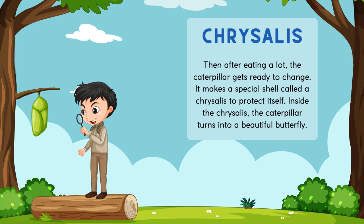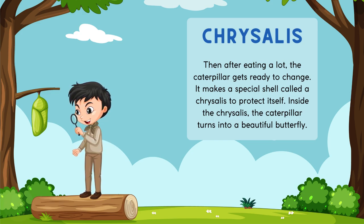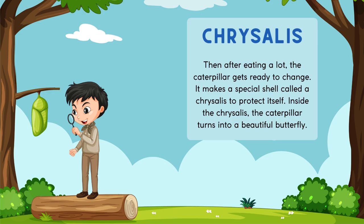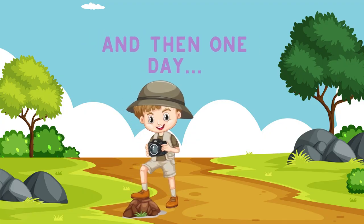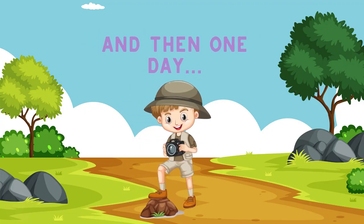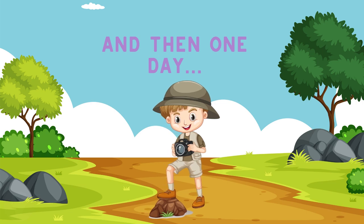It's called a chrysalis. So after eating a lot, the caterpillar gets ready to change. It makes a special shell called the chrysalis to protect itself. Inside the chrysalis, the caterpillar turns into a beautiful butterfly. We wait and we wait, and then one day...